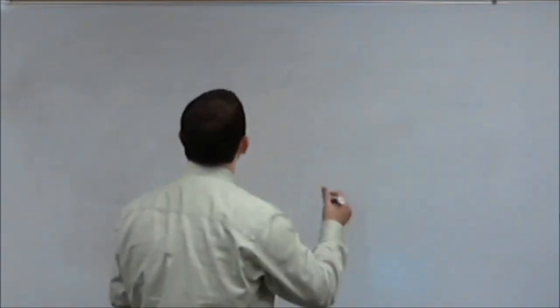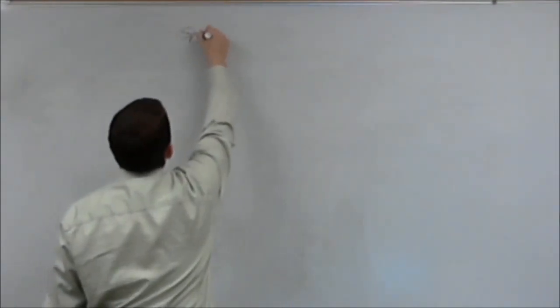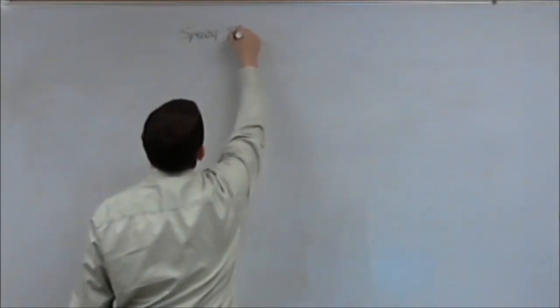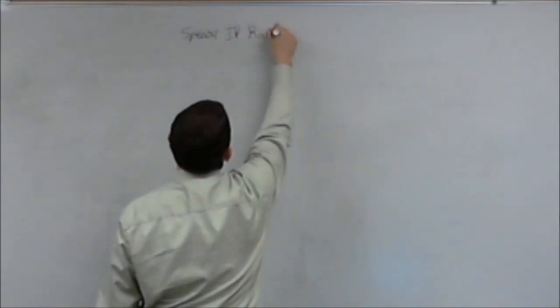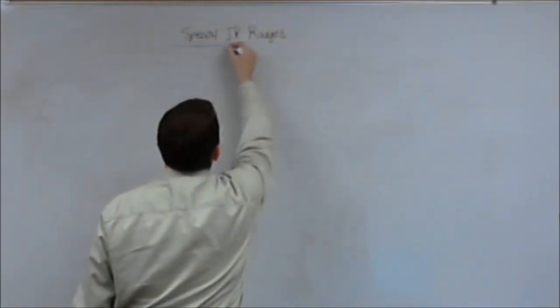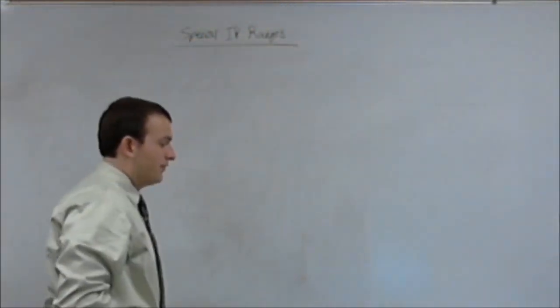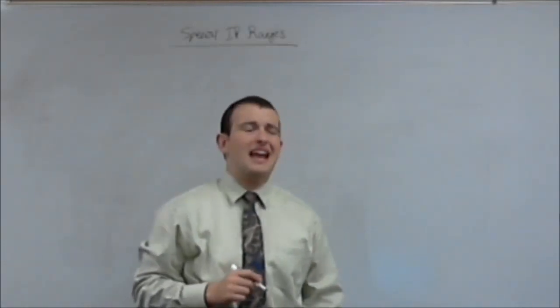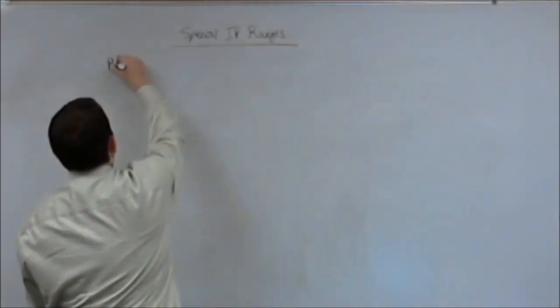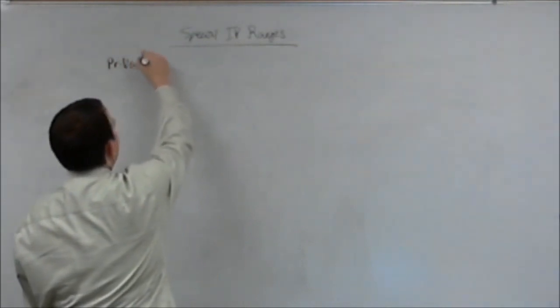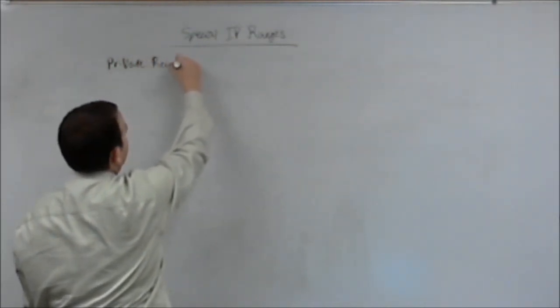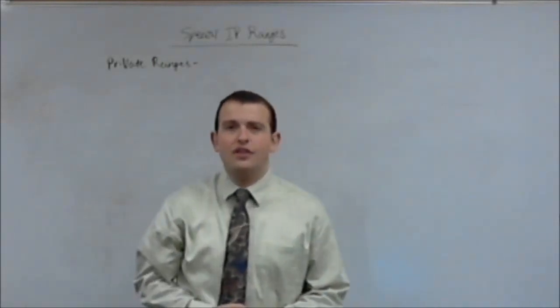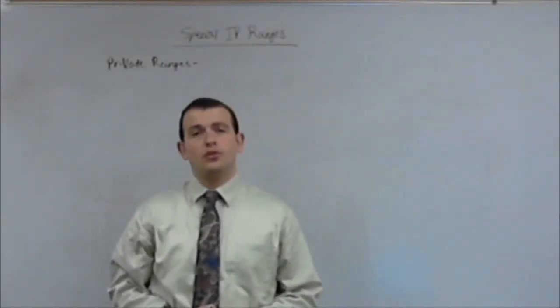So let's start out with some special IP addresses, some special IP address ranges you need to know. The first one we're going to talk about is private IP address ranges. What private ranges are is they are addresses that cannot be routed on the internet. They are for private networks only.